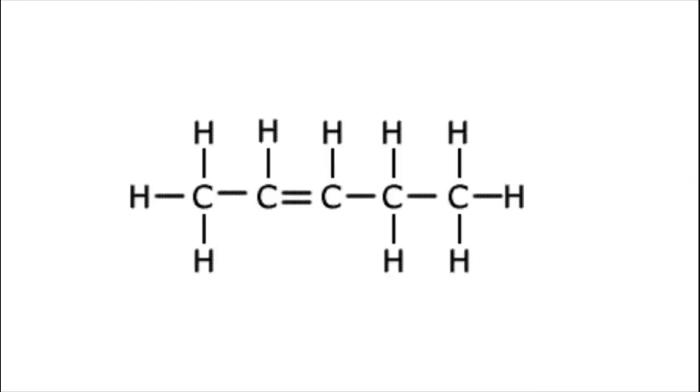After we have the numbering down, we can name the molecule. When we are naming molecules with a double bond, we have to indicate where that double bond is. We do that by putting the first carbon number of the double bond in the name of the alkene. For example, if the double bond is between the third and second carbon of a five-carbon molecule, it would be called pent-2-ene.